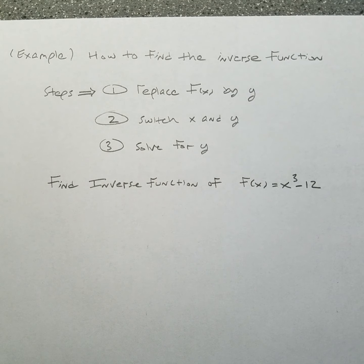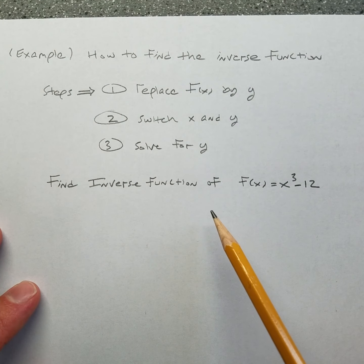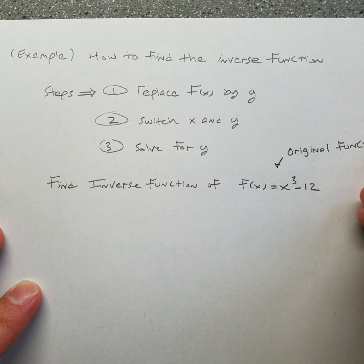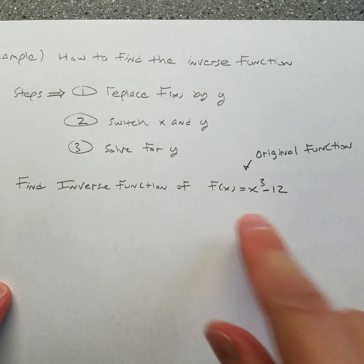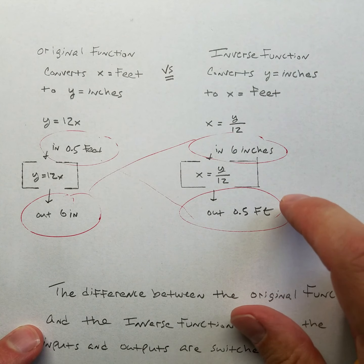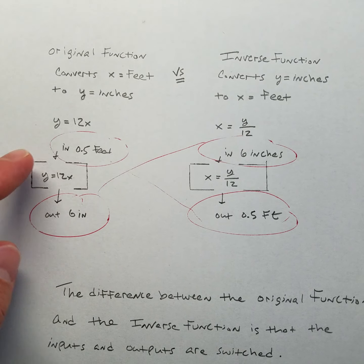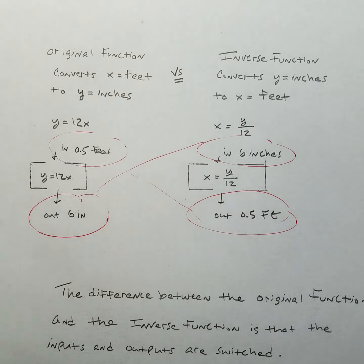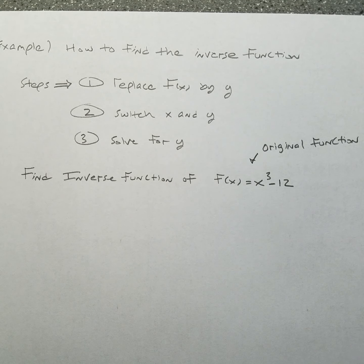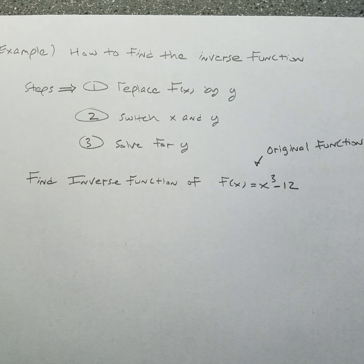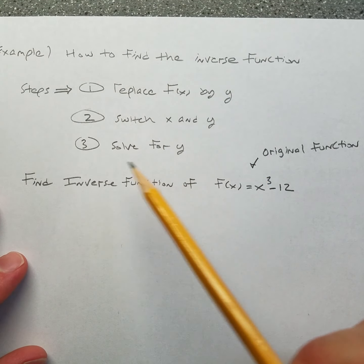Now here's something more like what you see in assignments. Suppose you have a function like this one — this is the original. Find the inverse of that; find the other function whose sole purpose is to switch the inputs and outputs. Here are the steps. You can do it some other way if you want, but this is basically what you do.